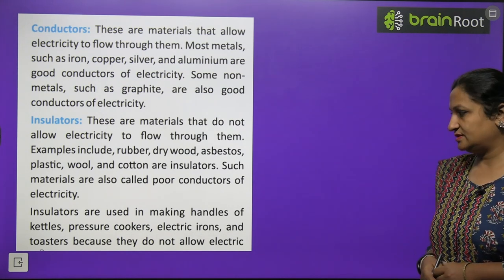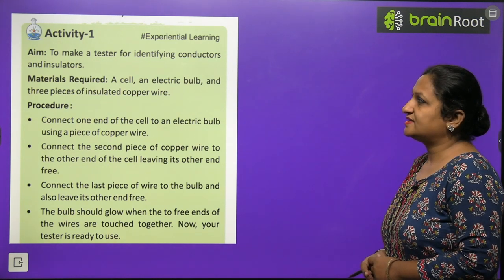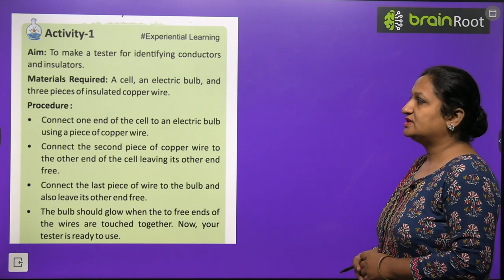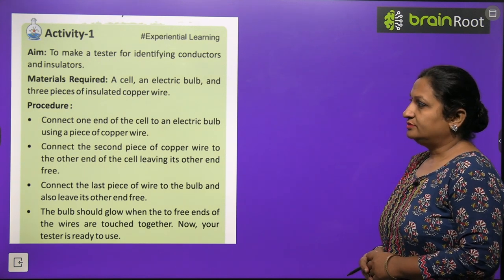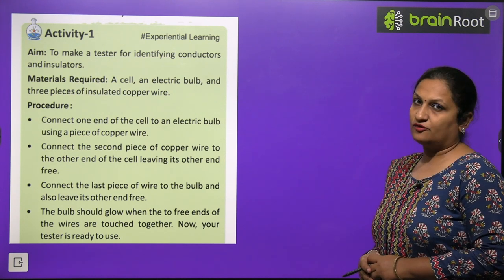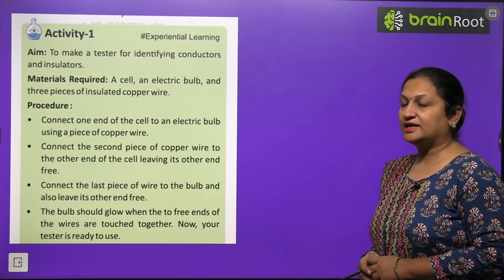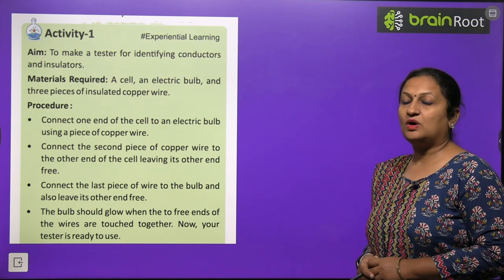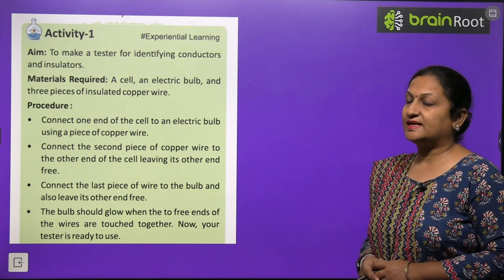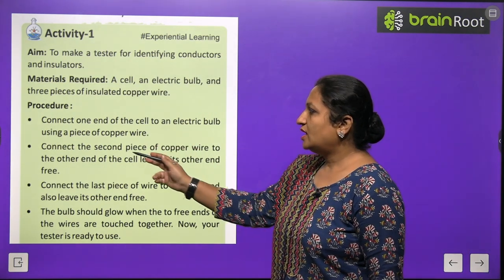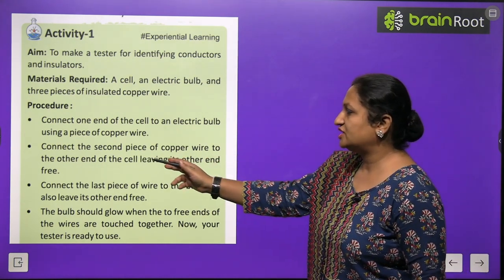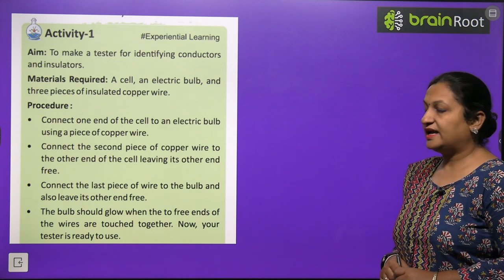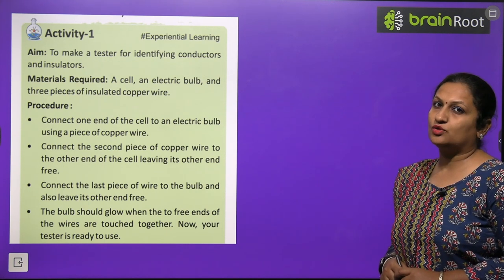Now have a look at Activity 1: to make a tester for identifying conductors and insulators. You will need a cell, an electric bulb, and three pieces of insulated copper wire. Connect one end of the cell to the electric bulb using a piece of copper wire. Attach the bulb to the other end of the cell. Connect the second piece of copper wire to the other end of the cell, leaving its other end free.